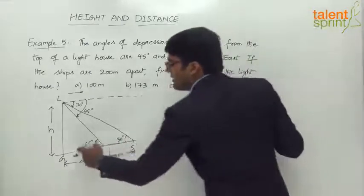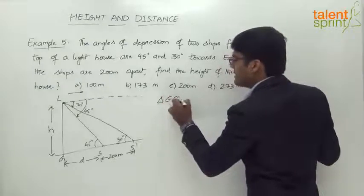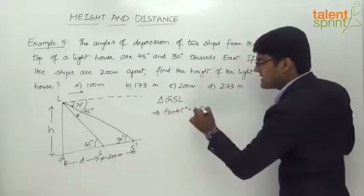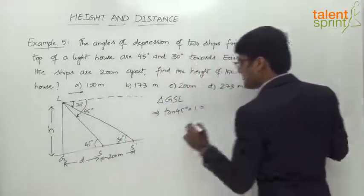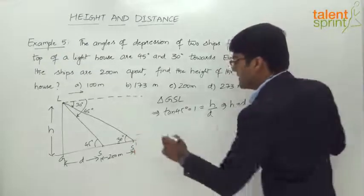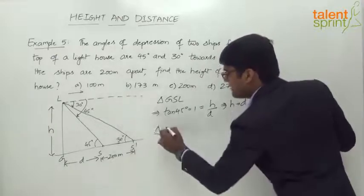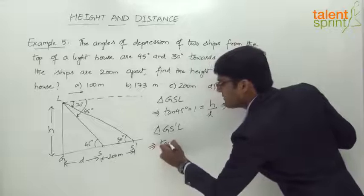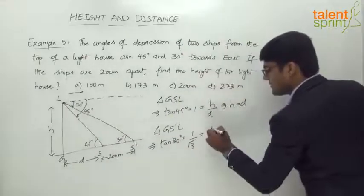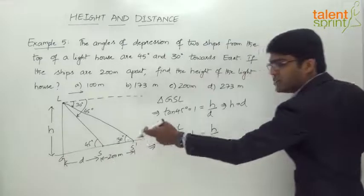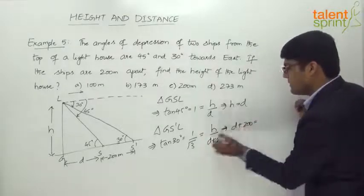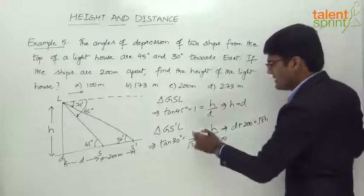For right triangle GSL, tan 45° = opposite over adjacent = h over d. Since tan 45° = 1, we get h = d. That's our first equation. For the second triangle GS'L, tan 30° = h over (d + 200). Since tan 30° = 1 over root 3, we have 1/√3 = h/(d + 200).